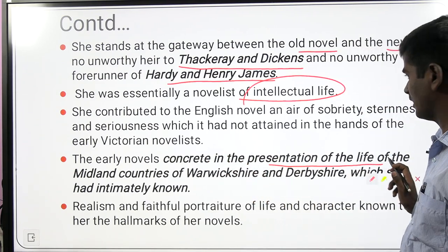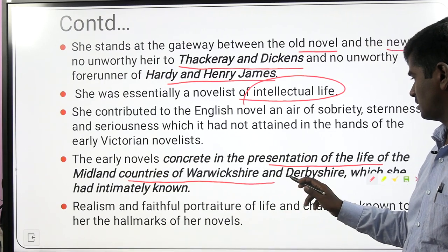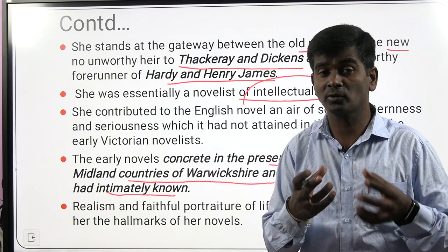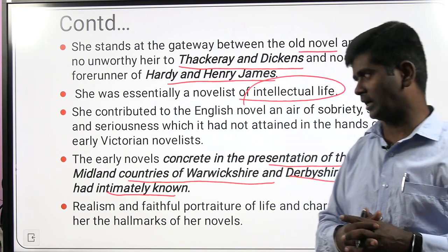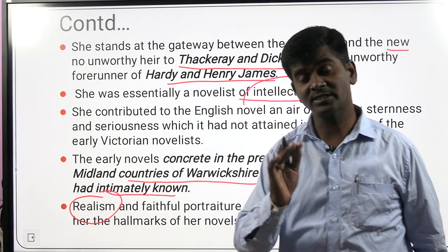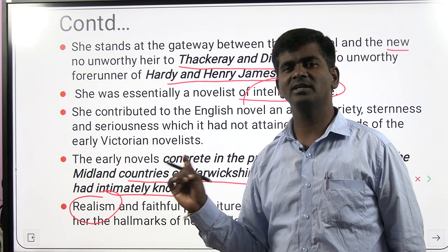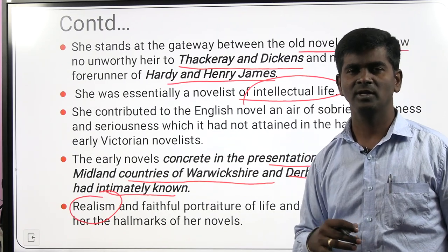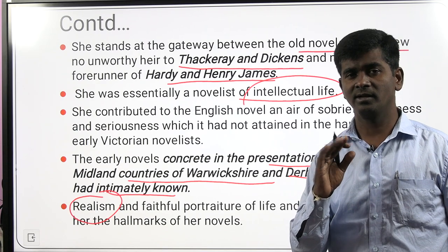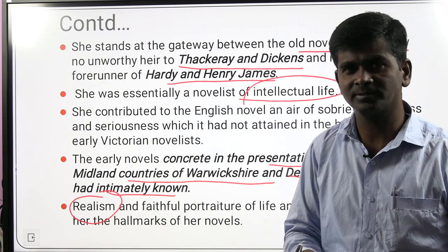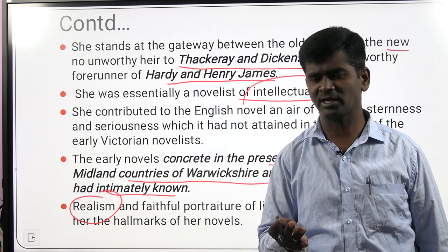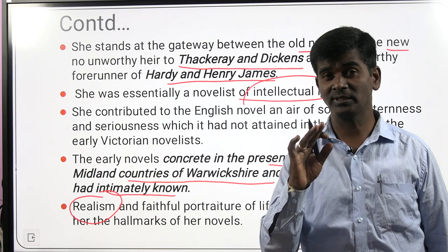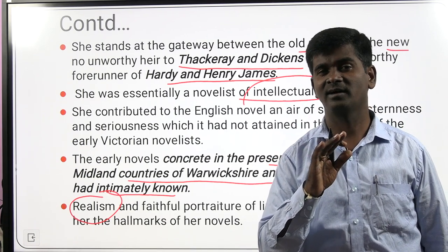Her novels are rooted in the presentation of life in the Midland counties of Warwickshire and Derbyshire, which she knew intimately. She described things as they are, hence her novels are realistic novels — faithful portraits of life. Writers like George Eliot, Jane Austen, Charlotte Brontë, Anne Brontë, Emily Brontë, and Charles Dickens are all considered realistic or social novelists because they described conditions as they are.